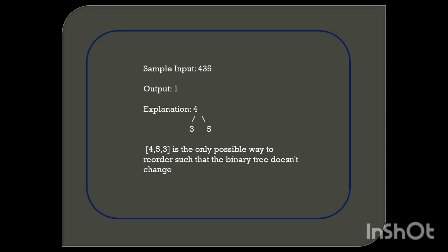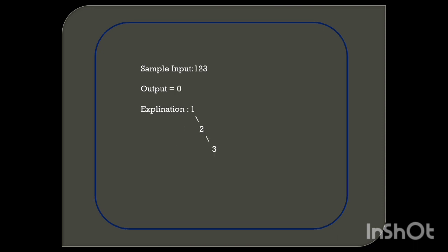The first sample case gives input data [4, 3, 5] and the output is 1. The explanation is that this is the only possible way to reorder such that the binary tree doesn't change. Here we know that 3 is less than 4 and 5 is greater than 4, satisfying the binary search tree property.